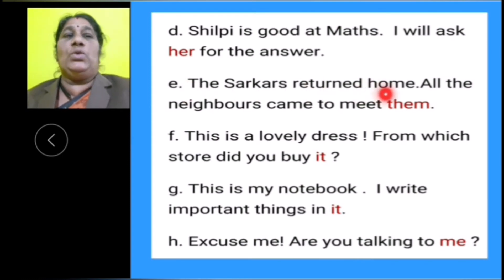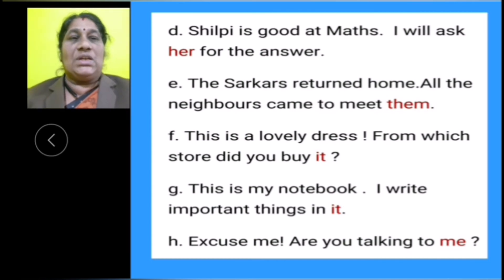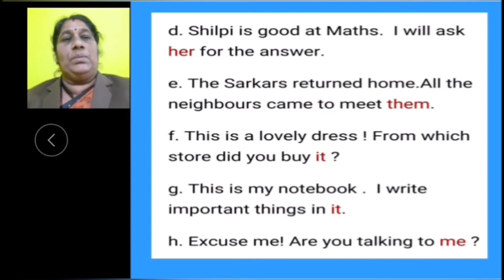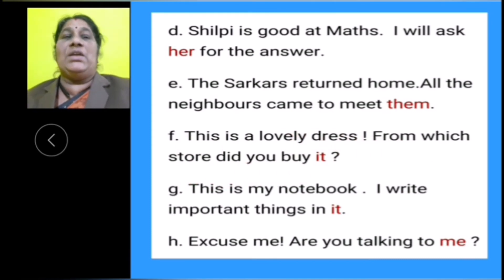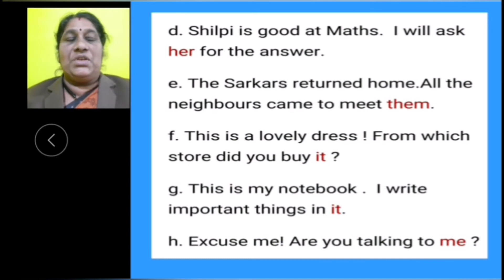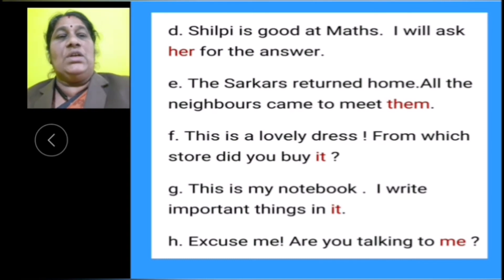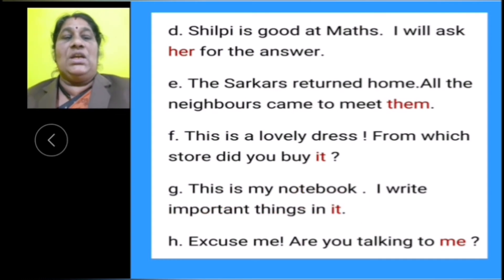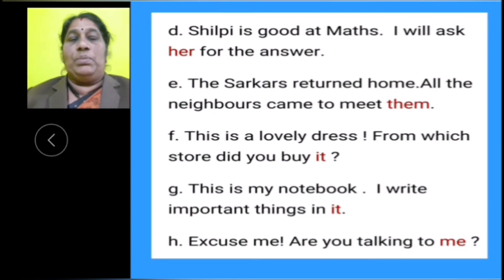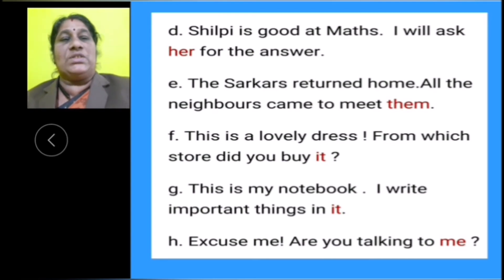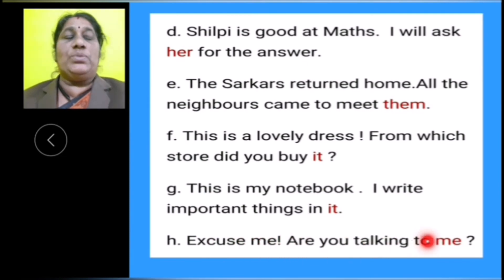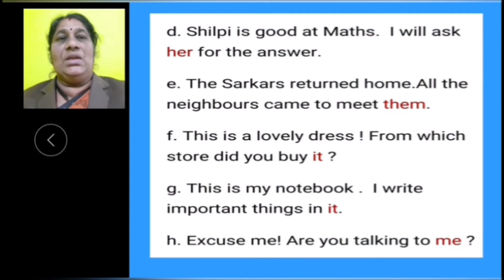E: The circus returned home. All the neighbors came to meet them — for the circus, object pronoun them is used. F: This is a lovely dress. From which store did you buy it? — for the dress, object pronoun it is used. G: This is my notebook. I write important things in it — for the notebook, object pronoun it is used. H: Excuse me. Are you talking to me? — for the subject I, object pronoun me is used.